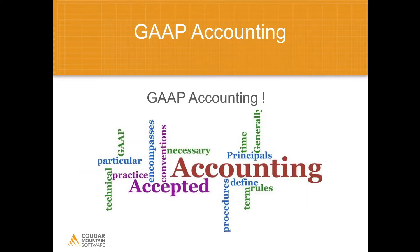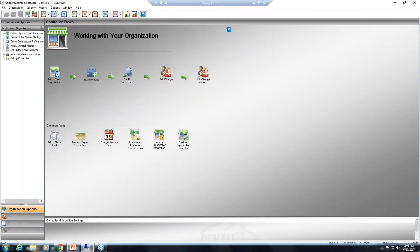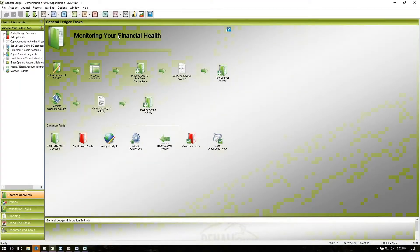The number one thing we focus on, especially in the nonprofit industry, is generally accepted accounting principles. Could you give us a few examples of how Denali adheres to GAAP accounting principles? Great question, Brian. Basically, the GAAP accounting systems implemented in Denali are specific to the security controls. You want to make sure that your accounting system allows you to process transactions. I've switched over to the Denali screens here so you can see.